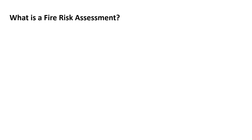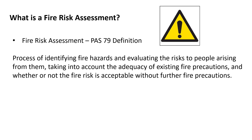Before moving into the PAS, let's briefly cover what a fire risk assessment is. The PAS 79 definition is: the process of identifying fire hazards and evaluating the risk to people arising from them, taking into account the adequacy of existing fire precautions and whether or not the risk is acceptable without further fire precautions. Essentially, we're looking at evaluating what's there now — is it acceptable, and do we need anything further?